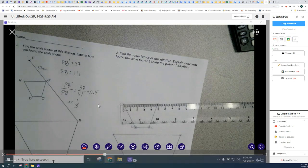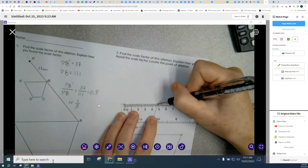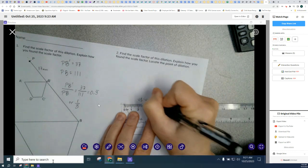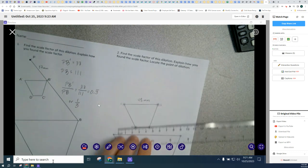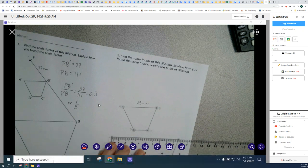Now the second one, I don't have the point of dilation, the center of dilation. So this time I'm just going to go ahead and measure the side lengths. So right now I'm measuring the distance from A to B and then the corresponding side length.